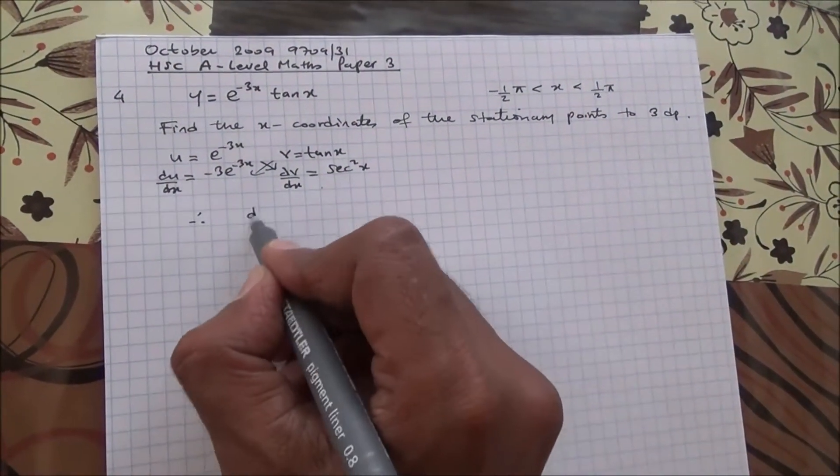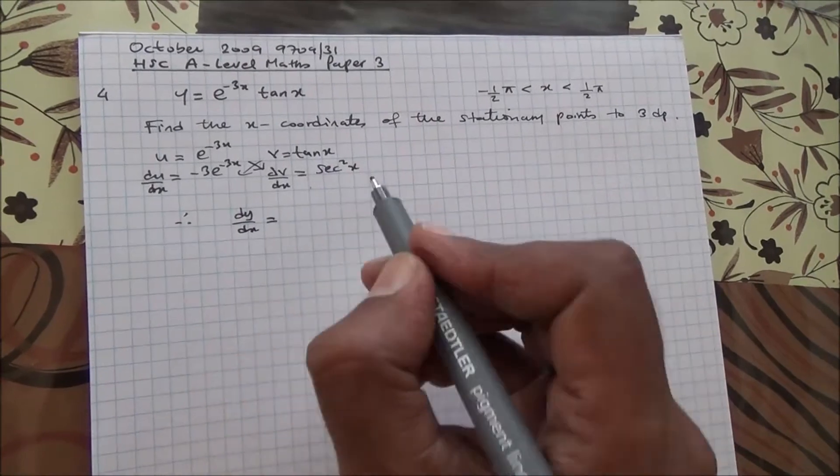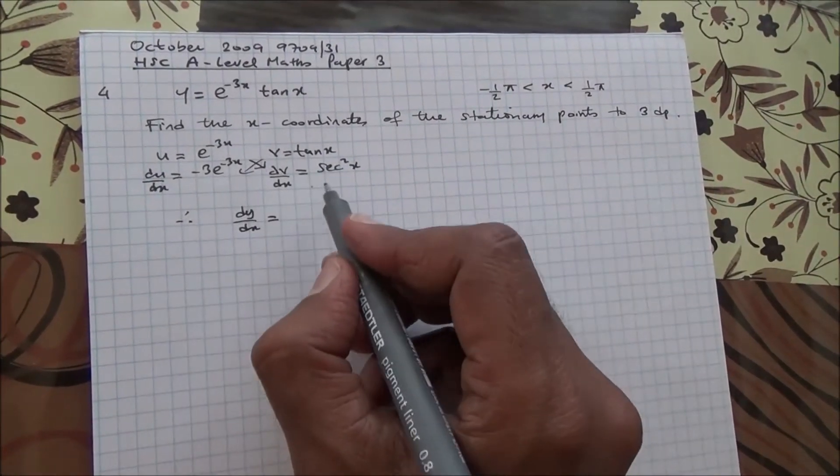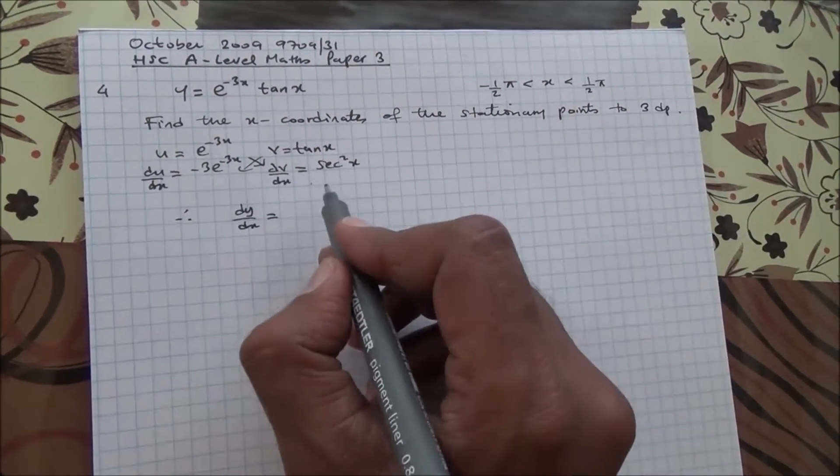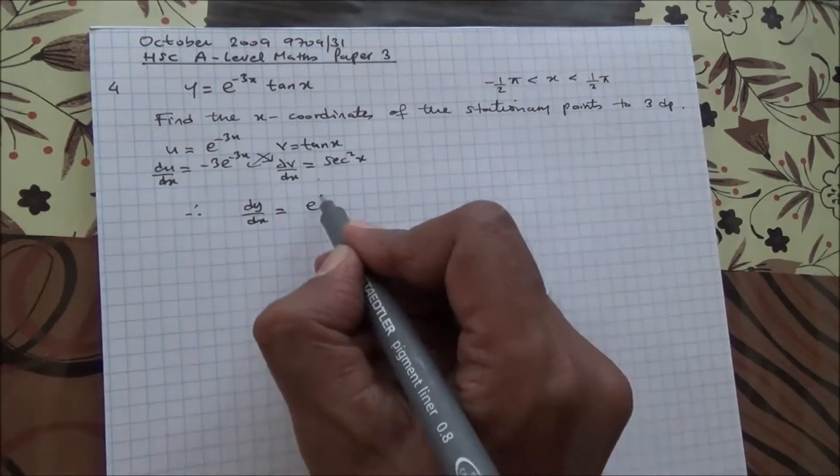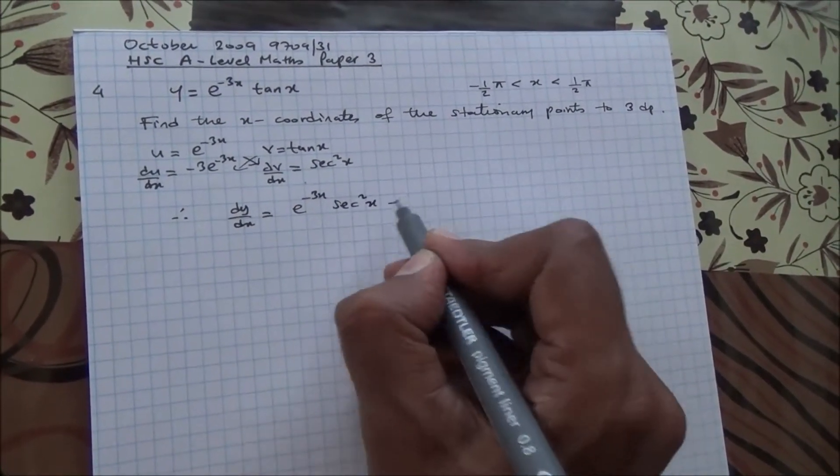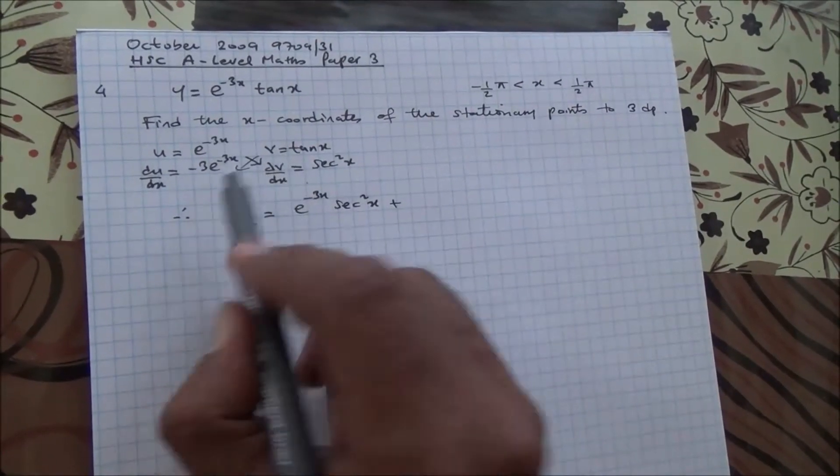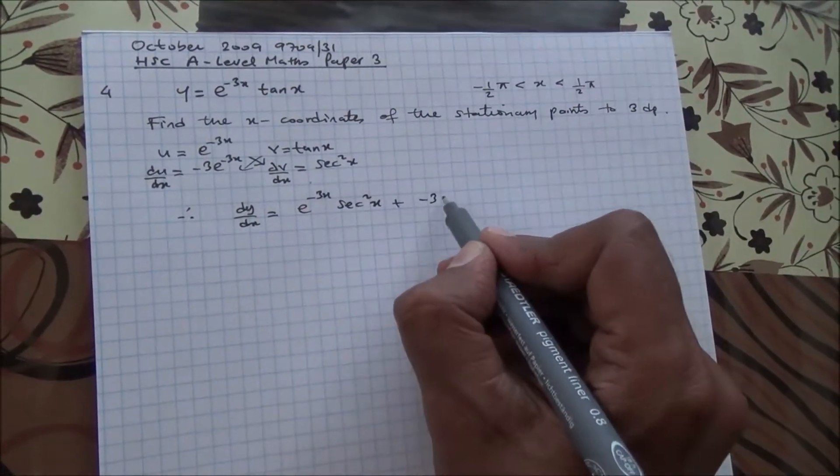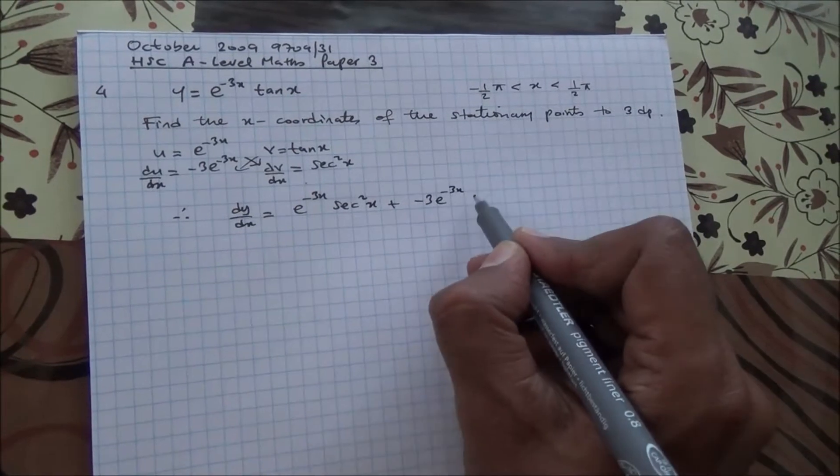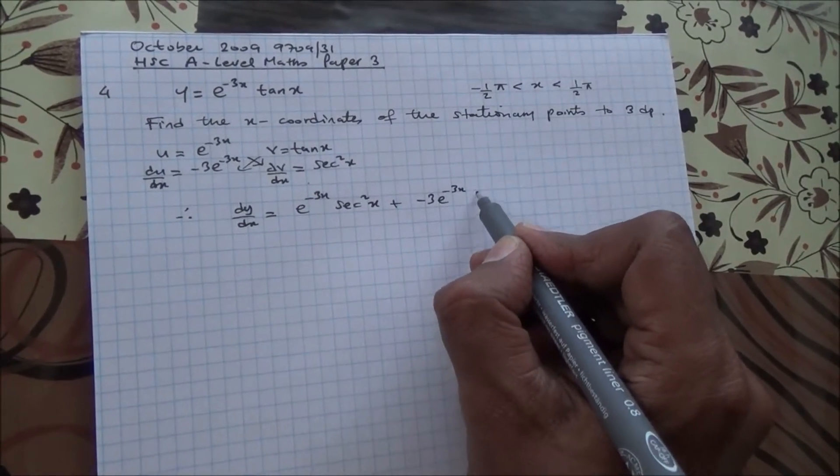Therefore, dy by dx is equal to v du by dx plus u dv by dx. So, u dv by dx: e to the power of minus 3x times sec squared x plus v du by dx: minus 3 e to the power of minus 3x times tan x.